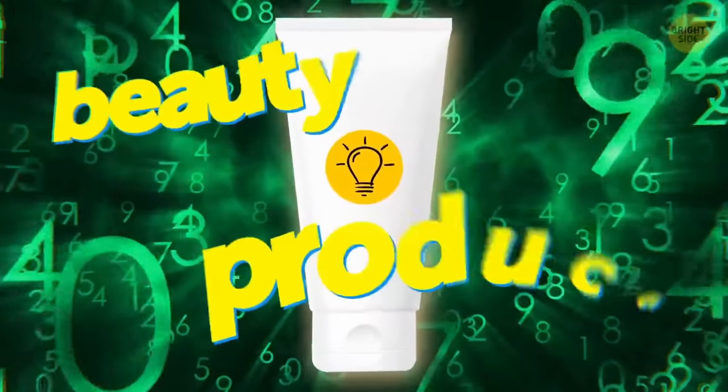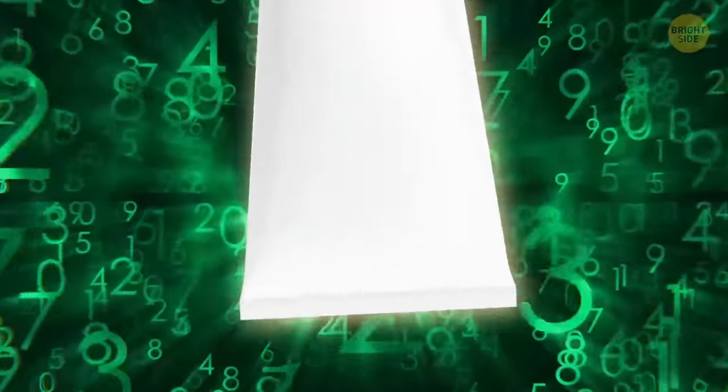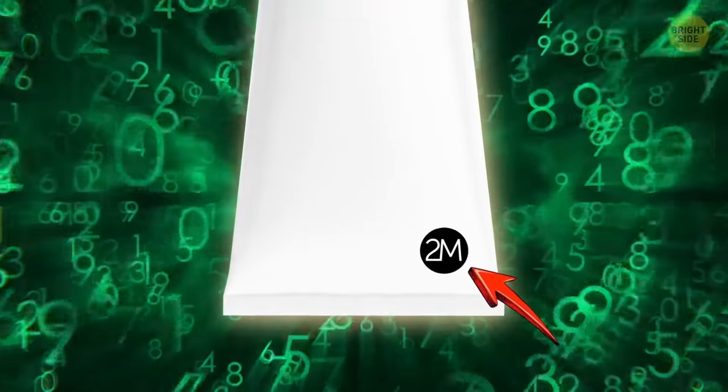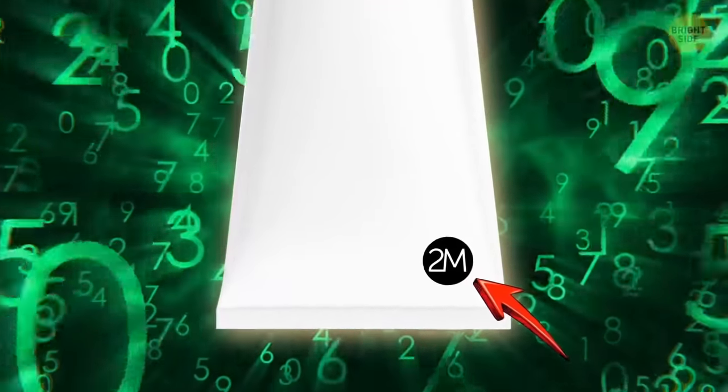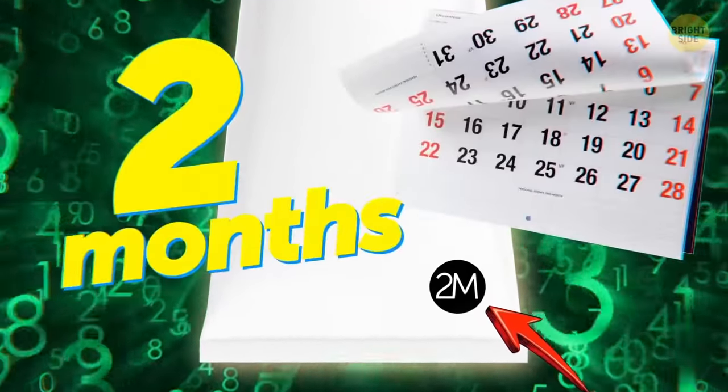On the back of most beauty products, you'll find a small symbol on the back that indicates how long it'll stay good for. For example, 2M means two months after opening.